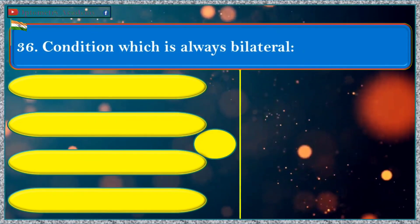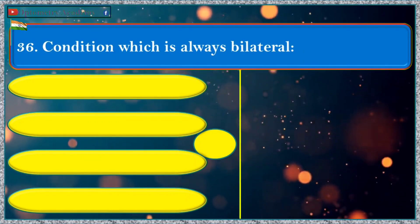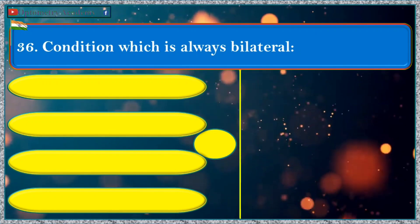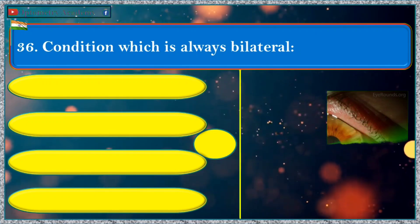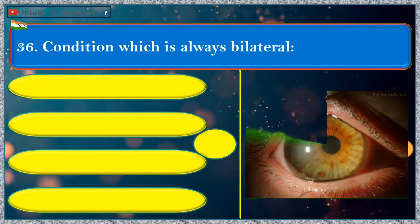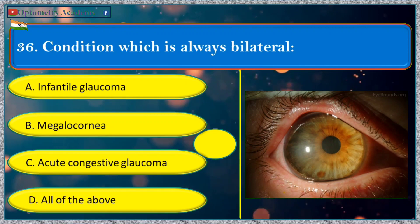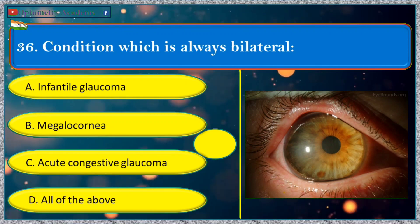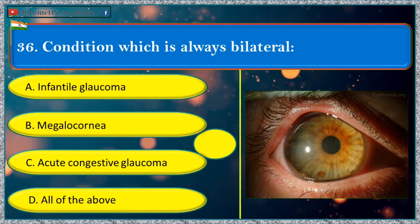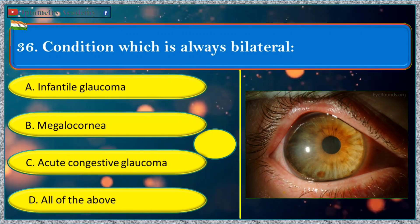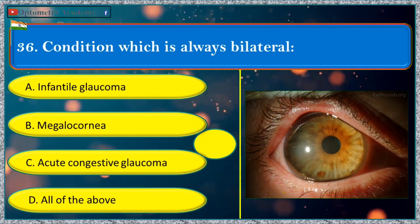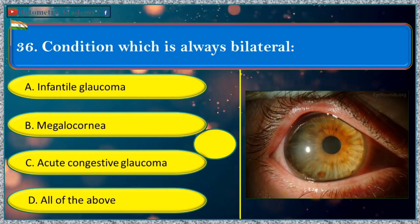Condition which is ocular and bilateral: a. infantile glaucoma, b. megalocornea, c. acute congestive glaucoma, d. all of the above.